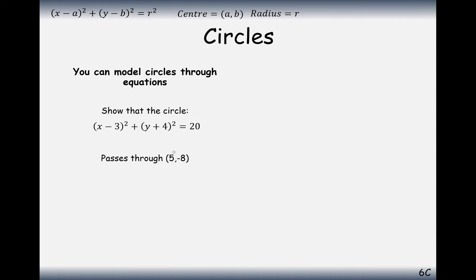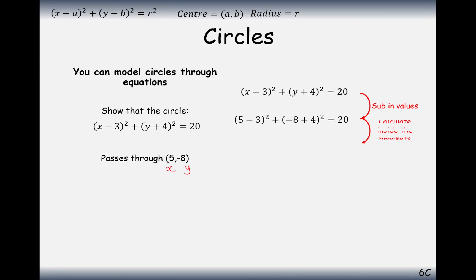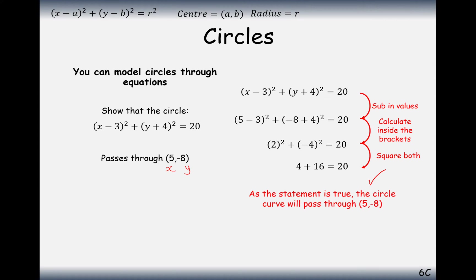On to a slightly different question: show that (x − 3)² + (y + 4)² = 20 has a coordinate that passes through (5, −8). We substitute those x and y values into the equation of our circle, and hopefully both sides give 20. Doing the maths: (5−3)² + (−8+4)² = 2² + (−4)² = 4 + 16 = 20. So (5, −8) definitely lies on this circle.